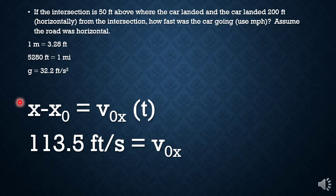I'm going to plug and chug a little bit, put in my 200 feet for the horizontal displacement, my time of 1.76 seconds and I get that the initial velocity in X was 113.5 feet per second. I already said that the initial velocity in Y was zero. So the total initial velocity is also 113.5 feet per second.